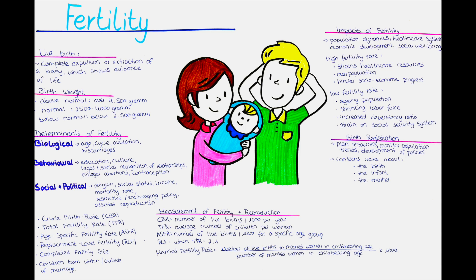Spontaneous abortions, commonly known as miscarriages, refer to the loss of a pregnancy before the 20th week of gestation. Genetic abnormalities, hormonal imbalances, uterine abnormalities, or maternal health conditions can contribute to miscarriages. Experiencing recurrent miscarriages can impact fertility and reproductive outcomes. Infertility is another factor influencing fertility.